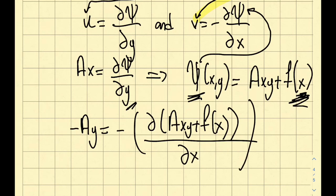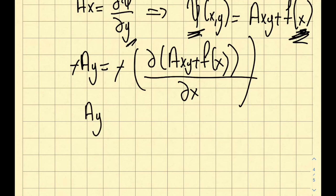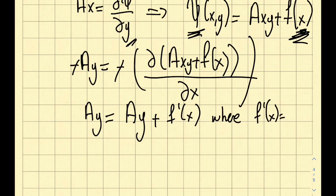Okay. Now, the left-hand side, well, negatives cancel each other, so let's stop by that. A, Y is equal to, what is the partial of A, X, Y with respect to X? It's going to be A, Y, right? Plus, what is the partial of F of X with respect to X? That's, I'm going to just put over here as a placeholder, F prime of X. Now, where I'm going to say F prime of X is equal to dFX/dX.